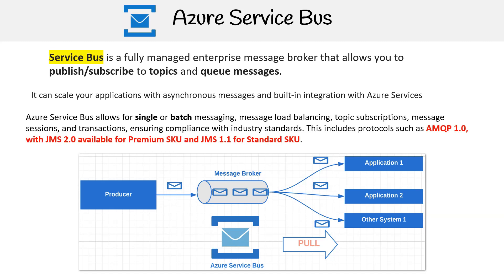Azure Service Bus allows for single or batch messaging, message load balancing, topic subscriptions, message sessions, and transactions, ensuring compliance with industry standards. This includes protocols such as AMQP 1.0 with JMS 2.0 available for premium SKU and JMS 1.1 for standard SKU.